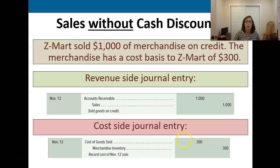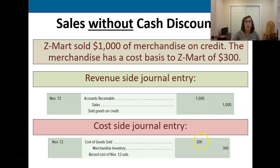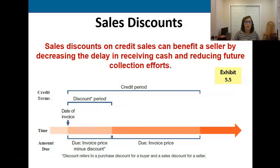So in quick math, what kind of profit did we make on this sale? If you said seven hundred dollars you would be correct — we sold something for a thousand dollars that we only paid three hundred for, so we made seven hundred dollars on this sale.